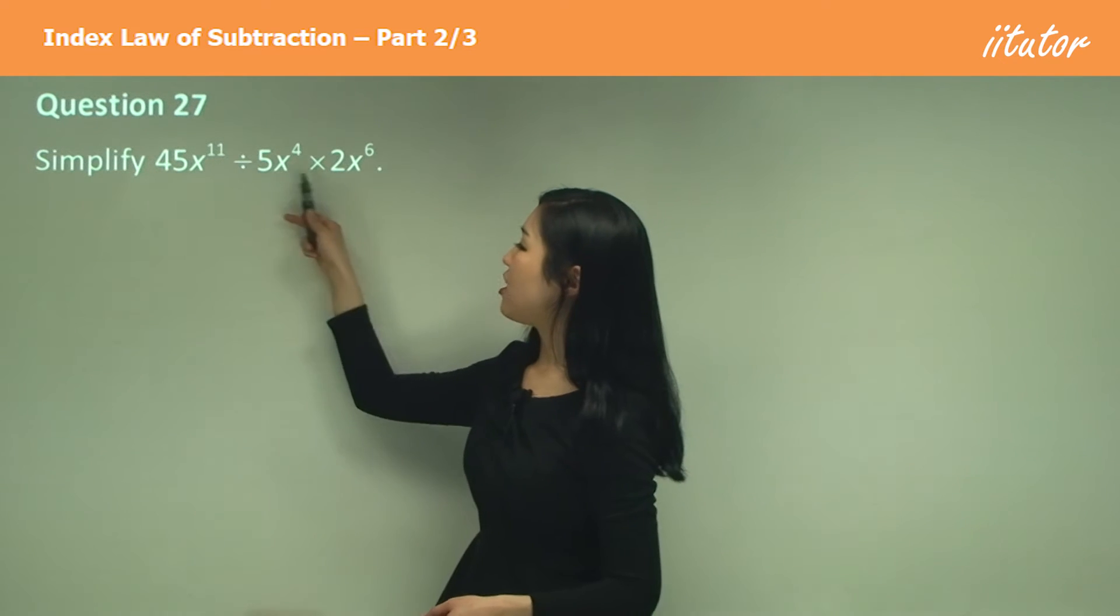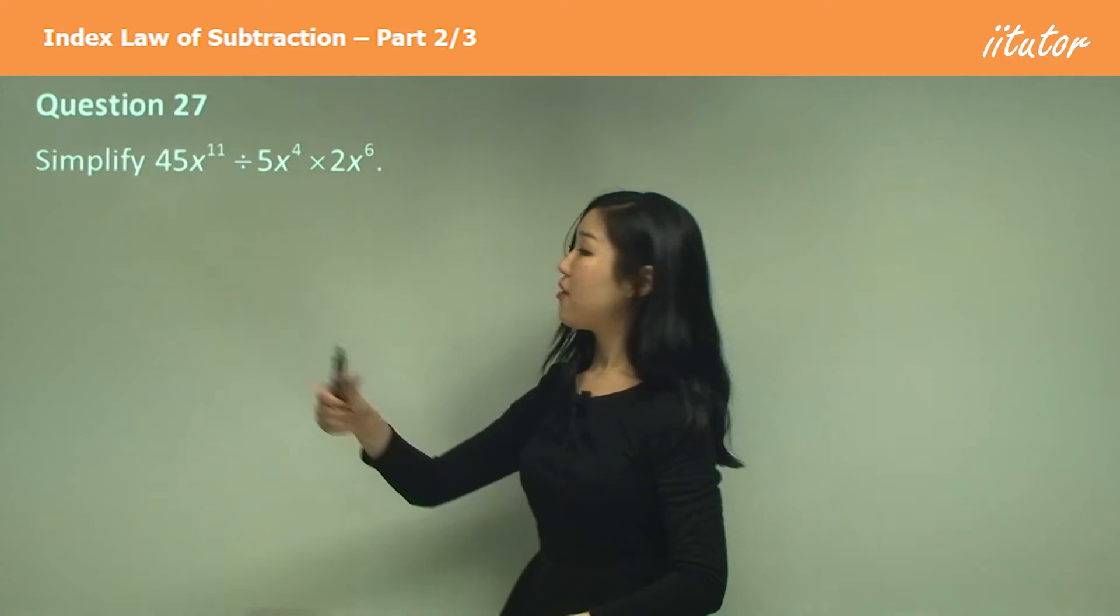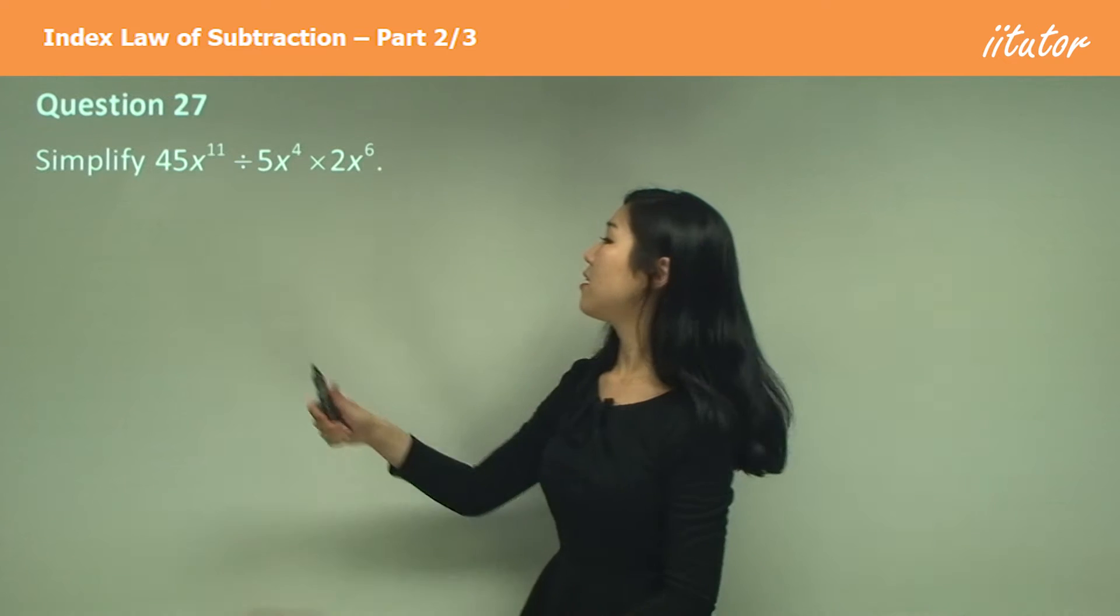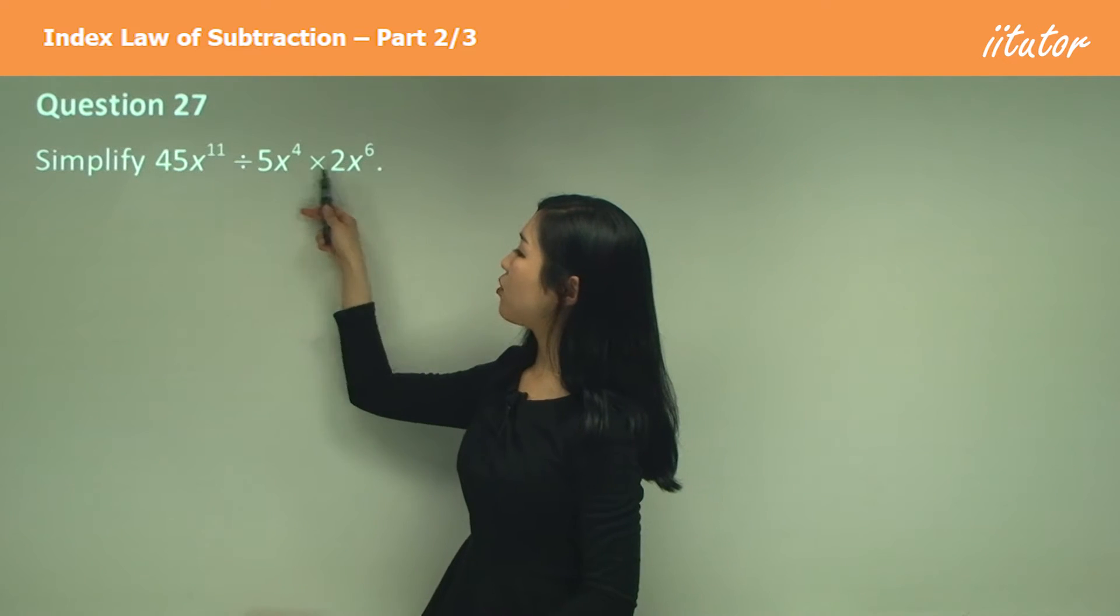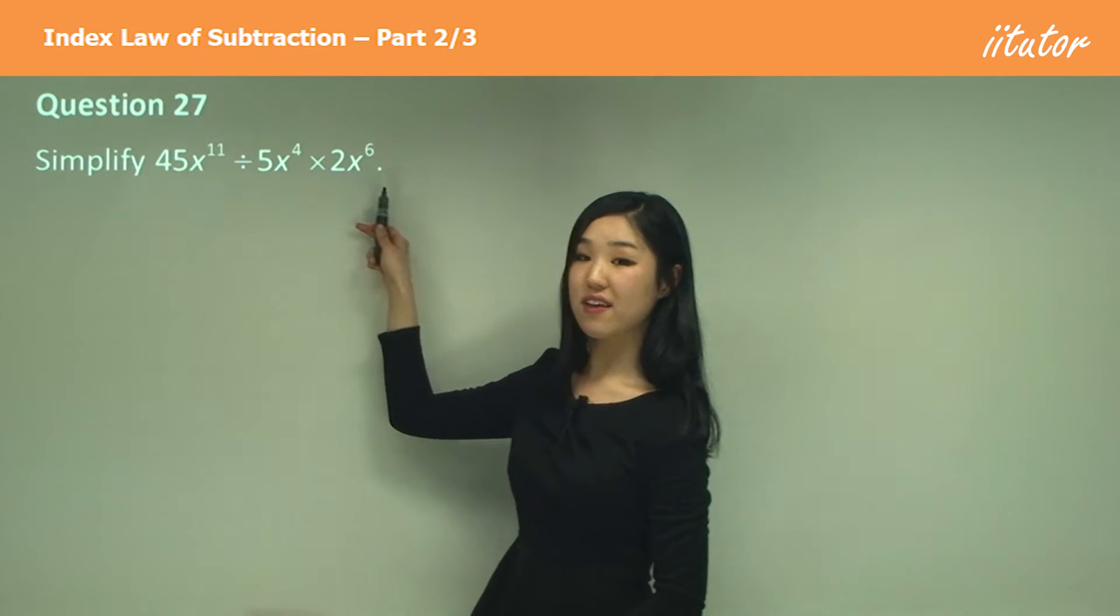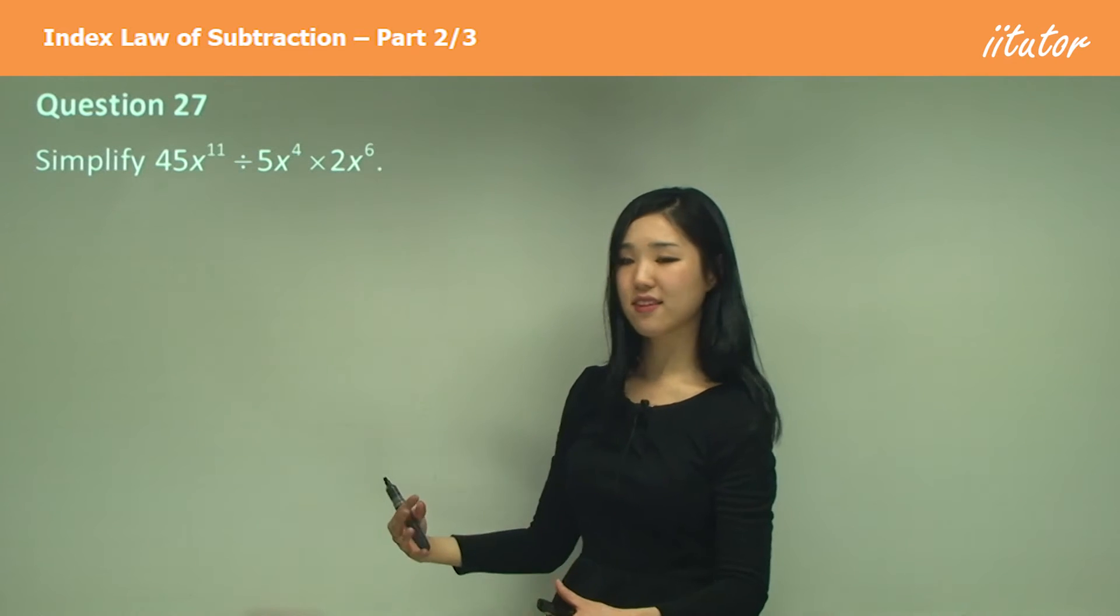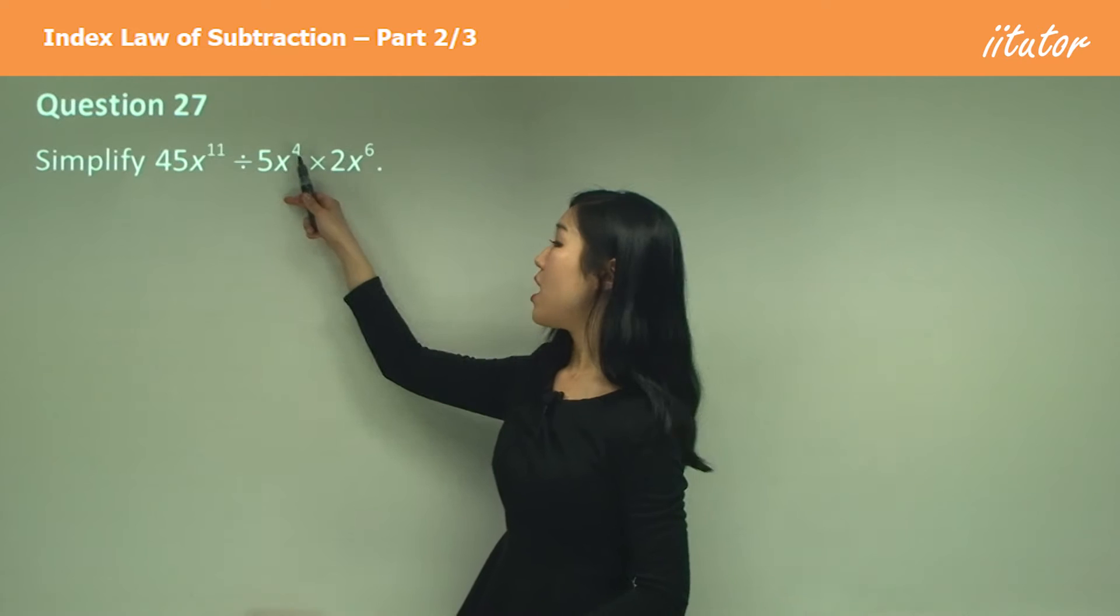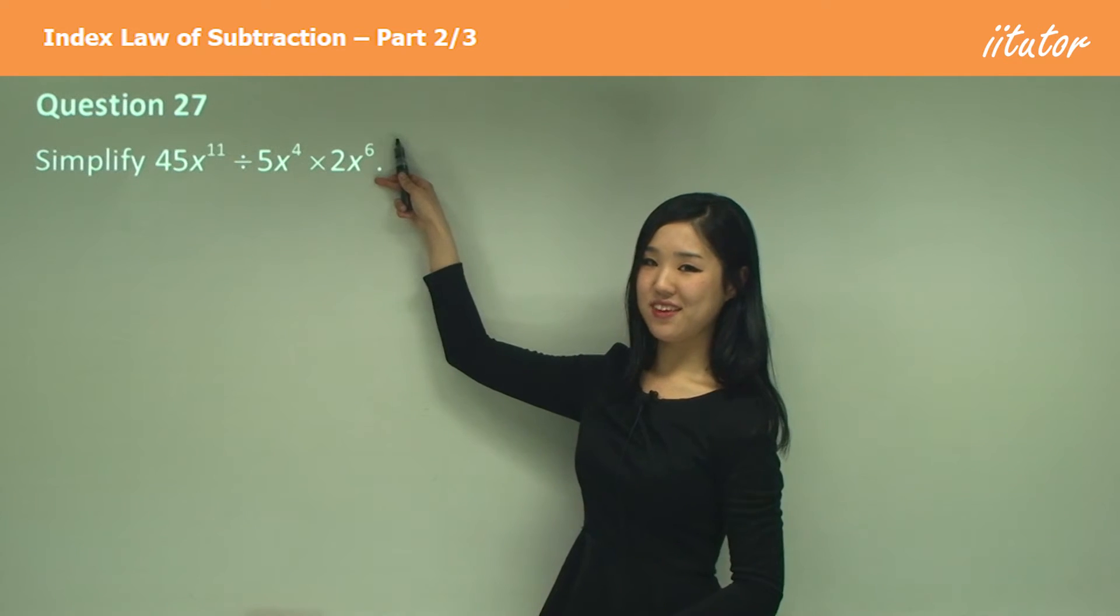And the numbers, you just put them at the front. So we'll go 45 divided by 5 times 2 out the front. See how the pronumerals here all have the base of x. When we're dividing, we'll subtract 11 and 4. When we're multiplying, we'll add the extra 6.